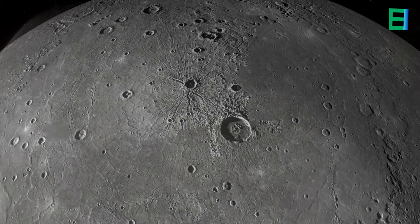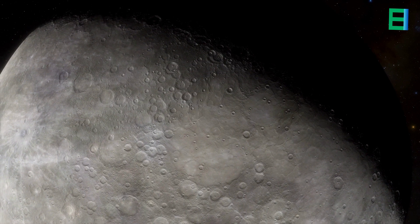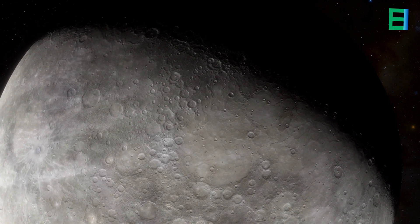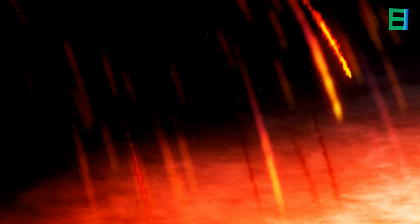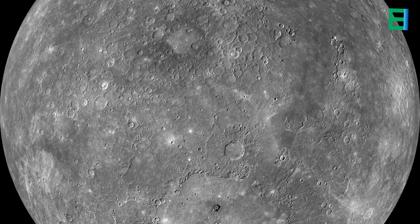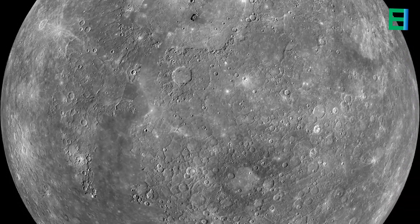These smooth, flat regions are reminiscent of the lunar maria found on the moon. However, unlike the moon's volcanic origins, the maria on Mercury are believed to have formed from the accumulation of impact debris. The maria exhibit distinct differences in texture and reflectivity compared to the surrounding terrain, making them easily identifiable.